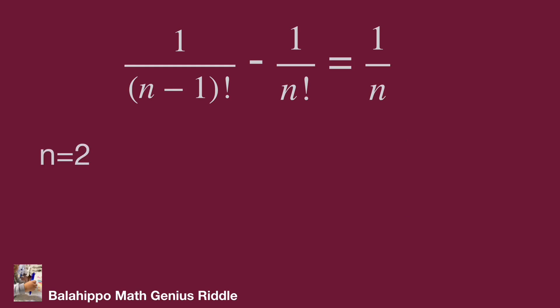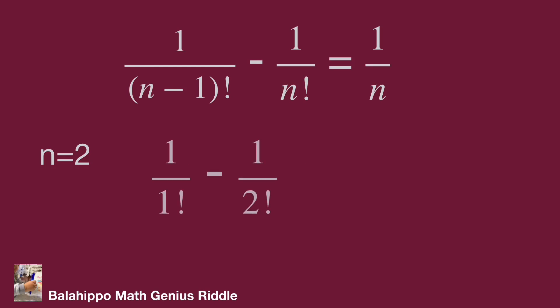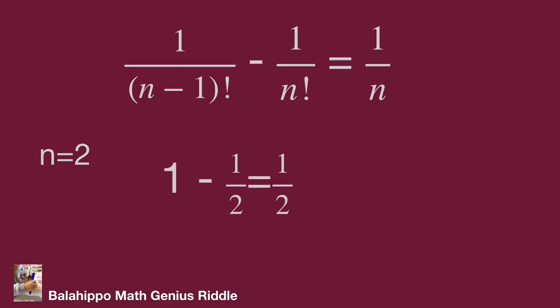Check n equals 2. The left side is 1 over (2 minus 1) factorial minus 1 over 2 factorial, which equals 1 over 1 factorial minus 1 over 2 factorial, equaling 1 minus 1 over 2, which equals 1 over 2. The right side is also 1 over 2, so n equals 2 appears to be a solution.